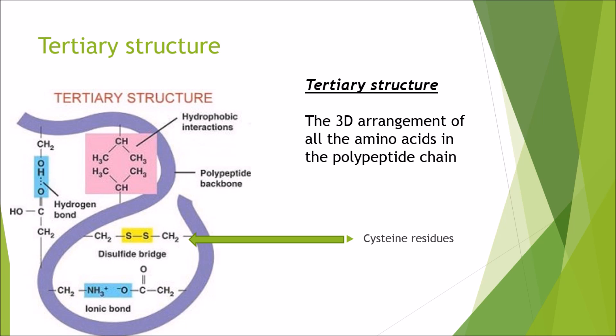The next step from secondary is tertiary. The tertiary structure is the 3D arrangement of all the amino acids in the polypeptide chain. In the tertiary structure you get all sorts of bonds forming. You get hydrogen bonds between oxygen and hydrogen. You get hydrophobic interactions and van der Waals forces between molecules. You can also get ionic bonds between like the amine group and the oxygen and also this is where cysteine comes in.